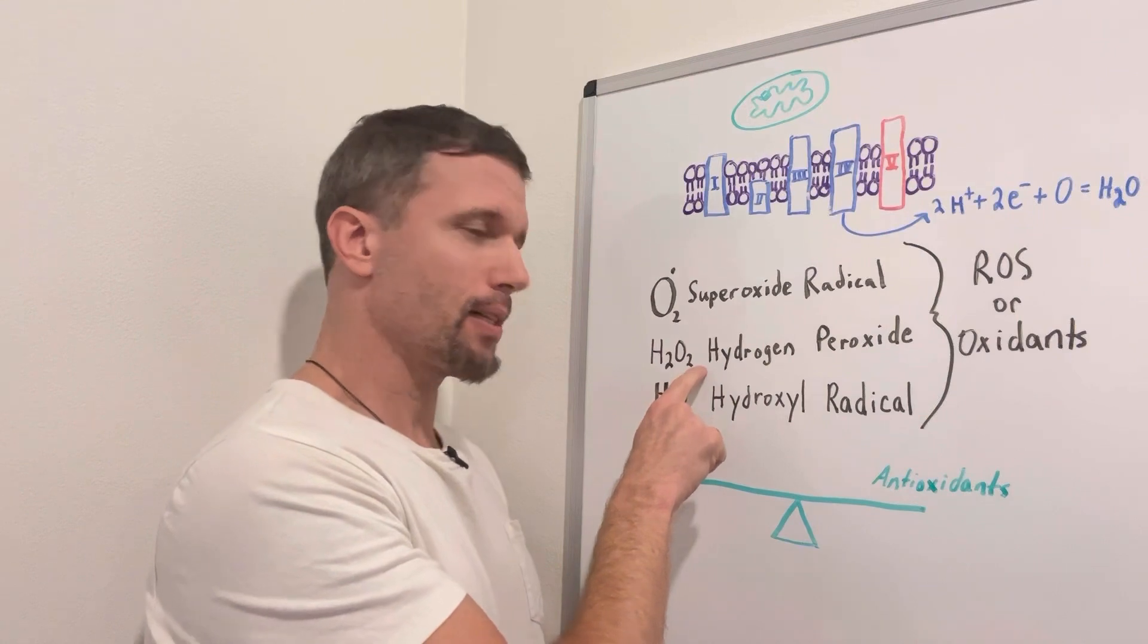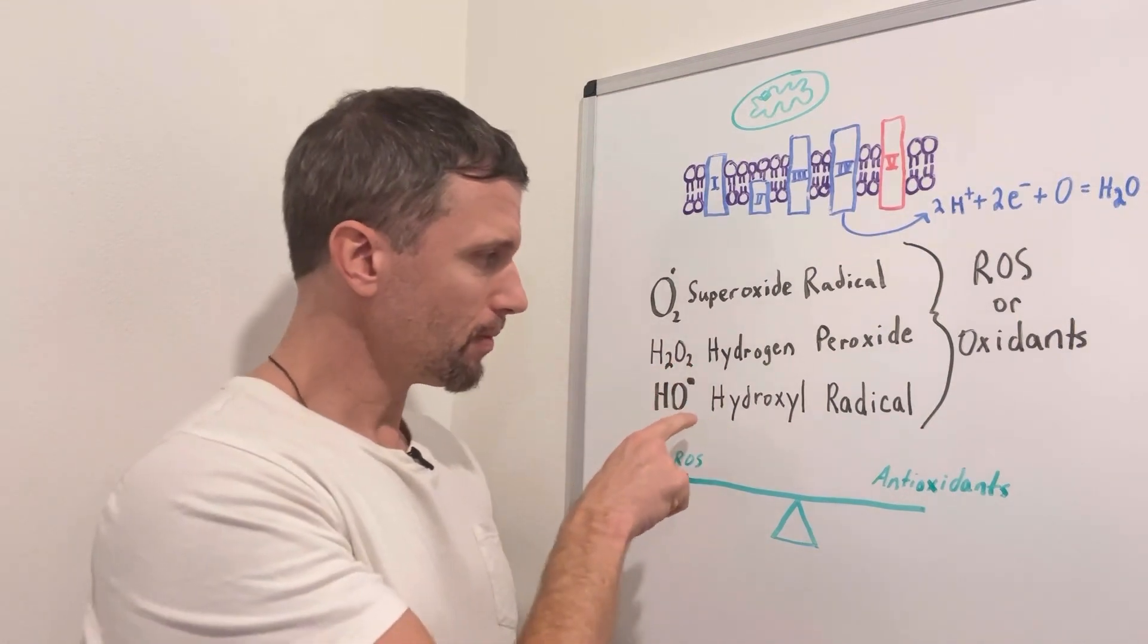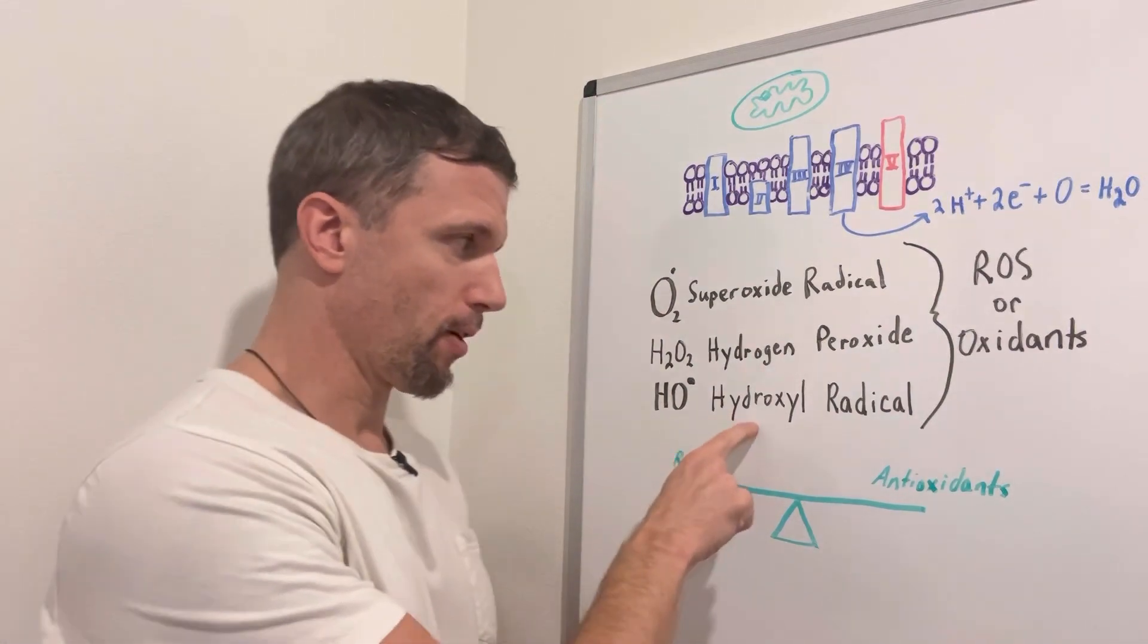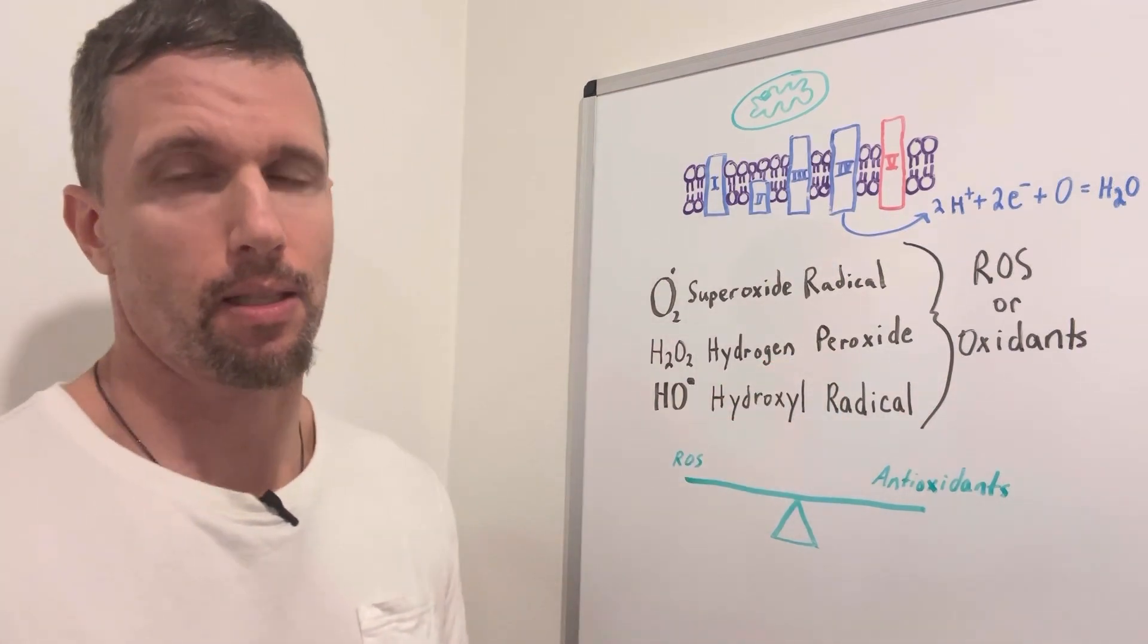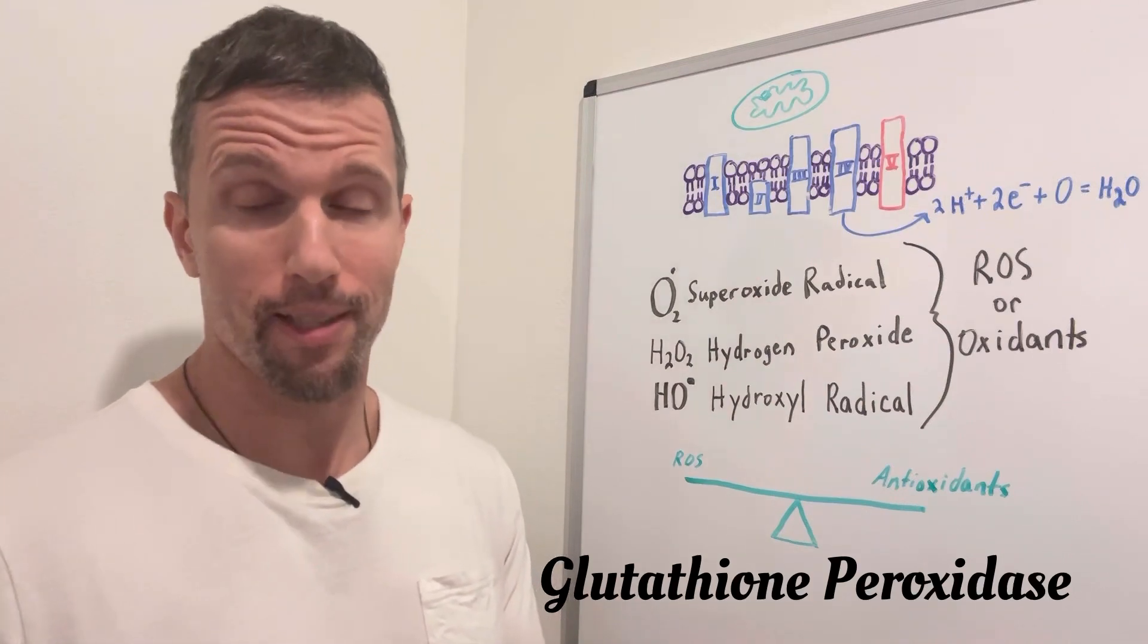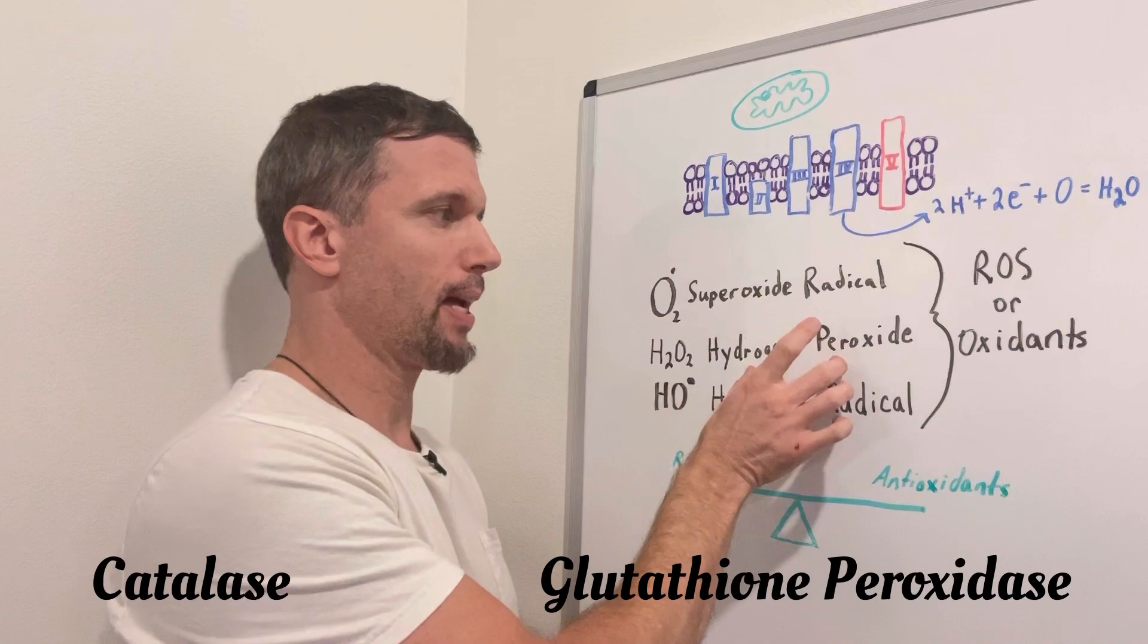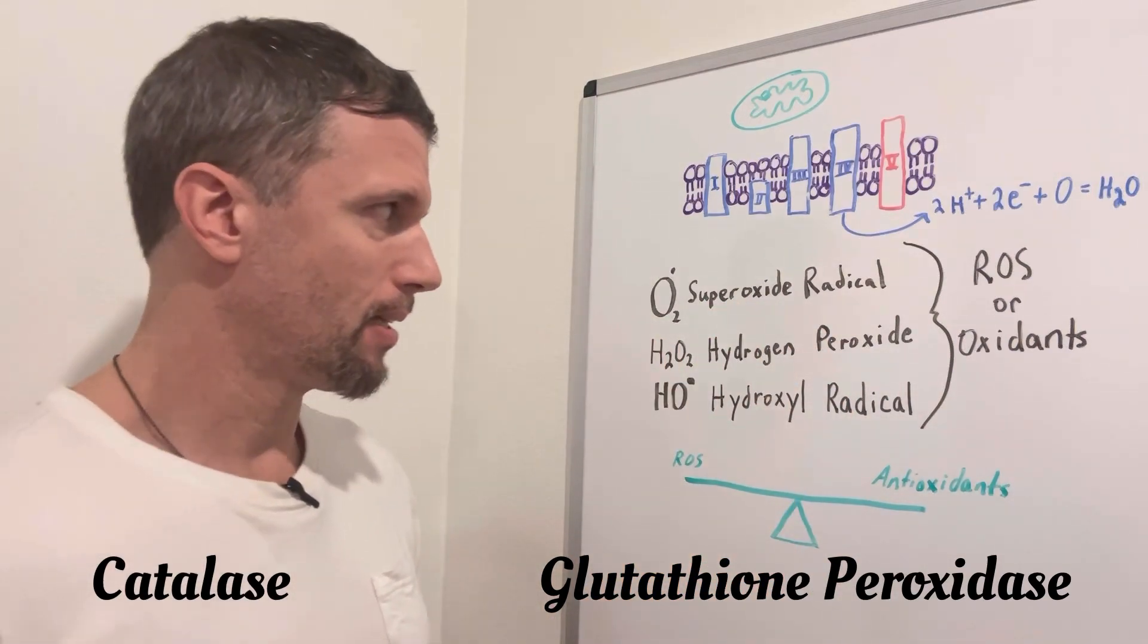So this is not going to steal electrons from stuff, but if it's left unchecked, it turns real quick into this hydroxyl radical that will. This is another free radical. So we actually have two enzymes that target this hydrogen peroxide as a substrate and that is glutathione peroxidase and catalase. So those will actually break that down into water and oxygen and kind of eliminate that threat.